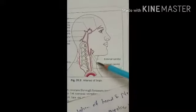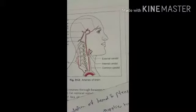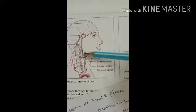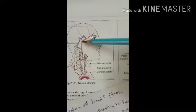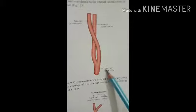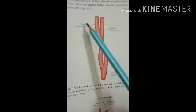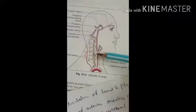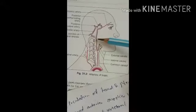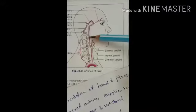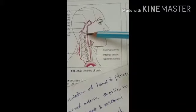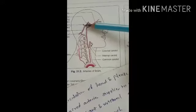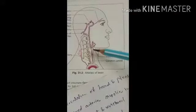Now let's see the common carotid artery. The common carotid artery divides into two branches: the external carotid artery and the internal carotid artery. The internal carotid artery enters the skull through the carotid foramen — also called the carotid opening — present at the base of the skull, and then helps to form the circle of Willis.